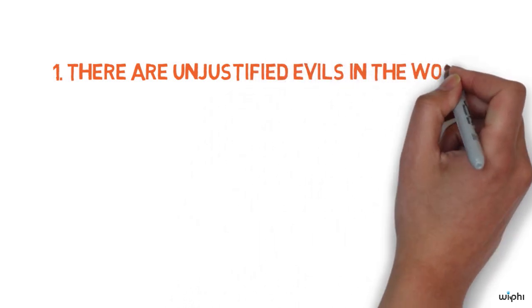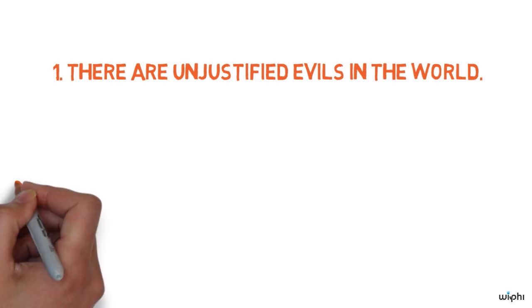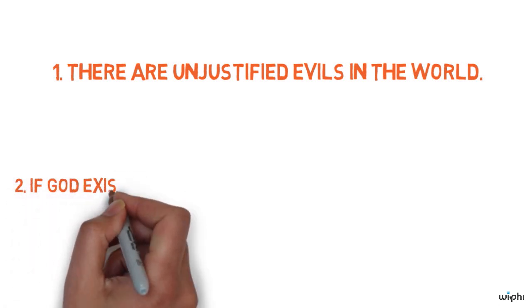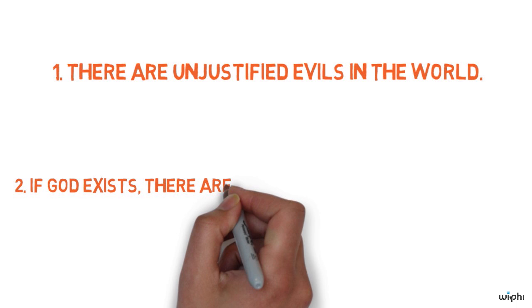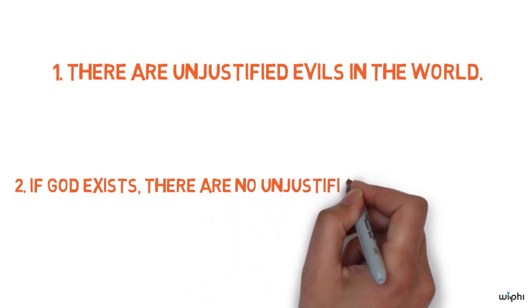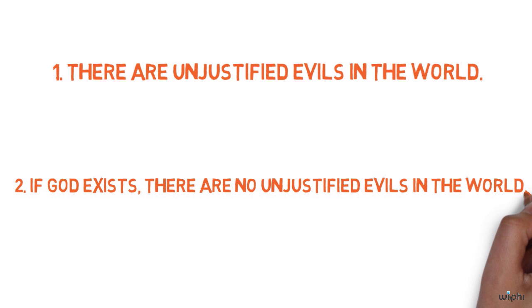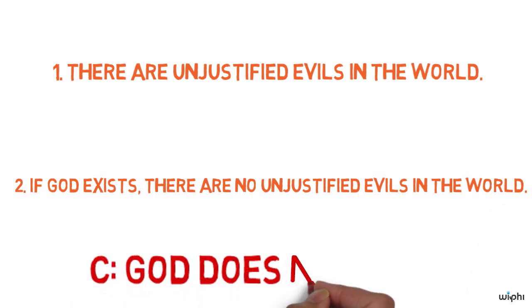Premise one, there are unjustified evils in the world. Premise two, if God exists, there will be no unjustified evils in the world. Conclusion, therefore God does not exist.